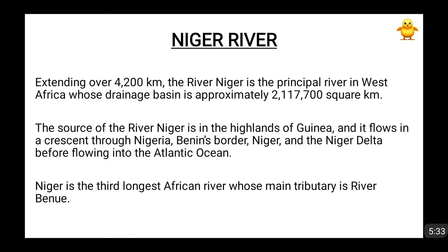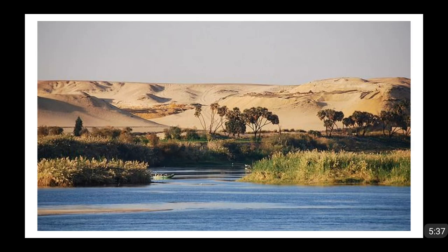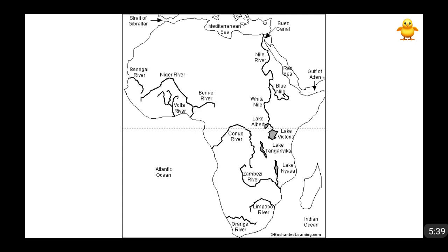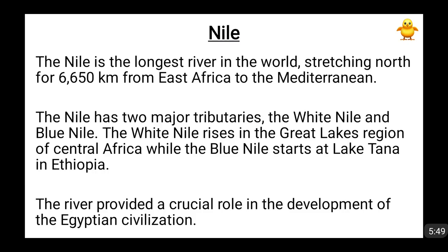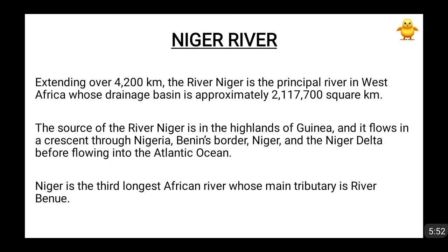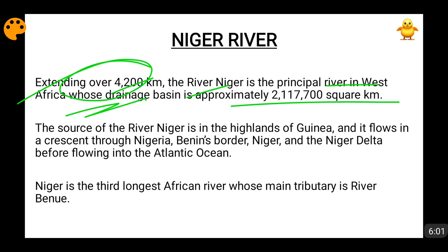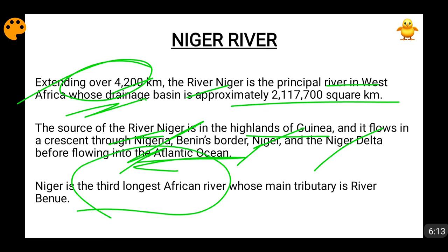The next river we are going to talk about is the Niger River. Looking at the Niger River on the map, you can see it here. Niger River extends for a length of 4,200 kilometers and is the principal river in West Africa. Its drainage basin is around 2,117,700 square kilometers. It originates in the highlands of Guinea, then passes through Nigeria and Niger Delta, and finally flows into the Atlantic Ocean. It is the third longest African river and its main tributary is the Benue River.